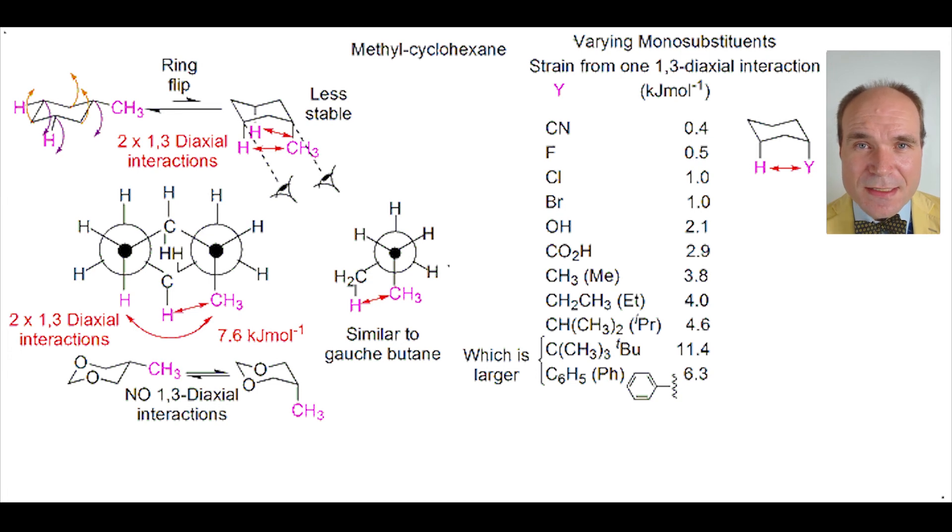This is not true of the t-butyl group that seems pretty big no matter how you rotate it. And so the t-butyl group in a 1,3-diaxial interaction creates more energy for the molecule than if it's a phenyl group. In fact, the tert-butyl group is considered to lock the chair, so it cannot practically ring flip, forcing the t-butyl group to always be in the equatorial position.